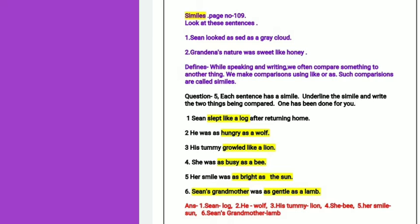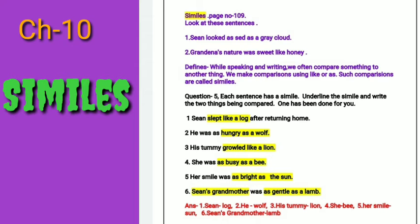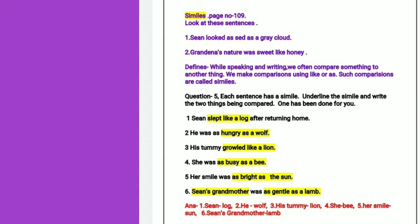Number three: his tummy growled like a lion. Number four: her smile was as bright as the sun. And number six: Sheen's grandmother was as gentle as a lamb.